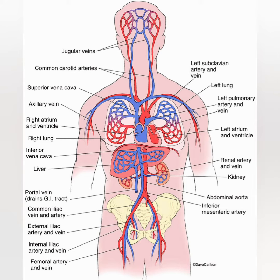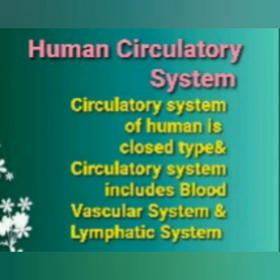Here is the picture of the human circulatory system. Observe and try to understand. The circulatory system of humans is a closed type, and it includes the blood vascular system and the lymphatic system.